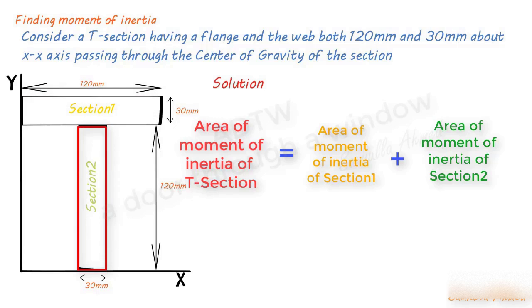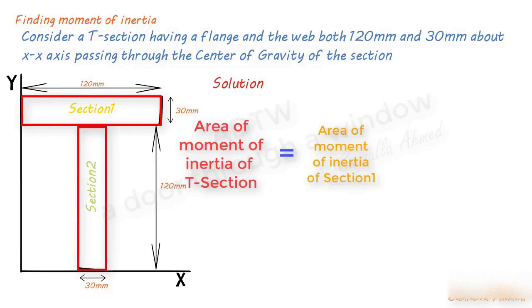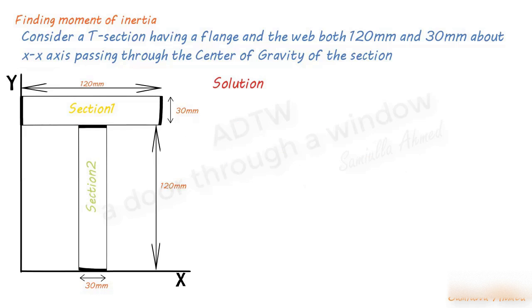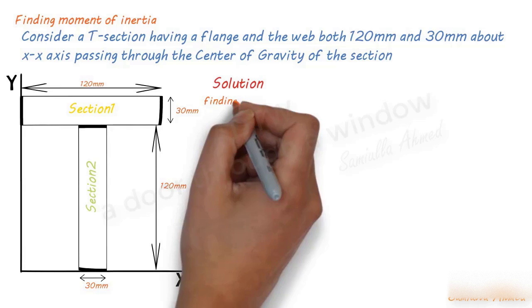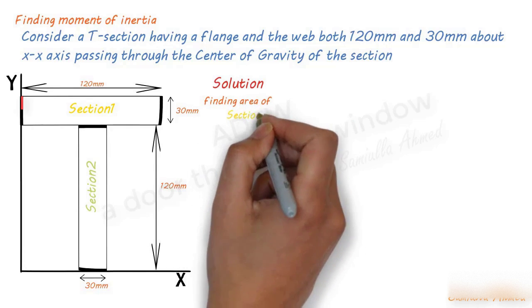Similarly, the moment of inertia of the T-section about the Y-axis is given as the sum of the moment of inertia of Section 1 and Section 2 about the Y-axis. Now let me start solving by finding the area of each section.